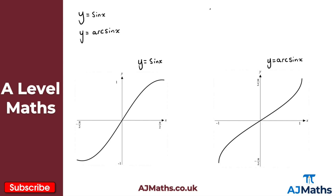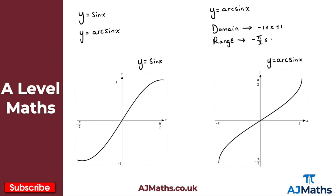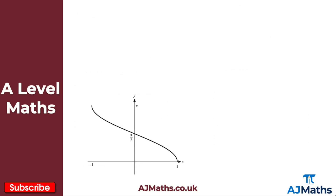Now we need the domain and range for y equals arc sine x. For the domain, this is given as between minus one and positive one, and we do include those values. For the range of y equals arc sine x, you can clearly see it goes from minus pi over two to pi over two, and we include those values as well. That's everything we need for y equals arc sine x.